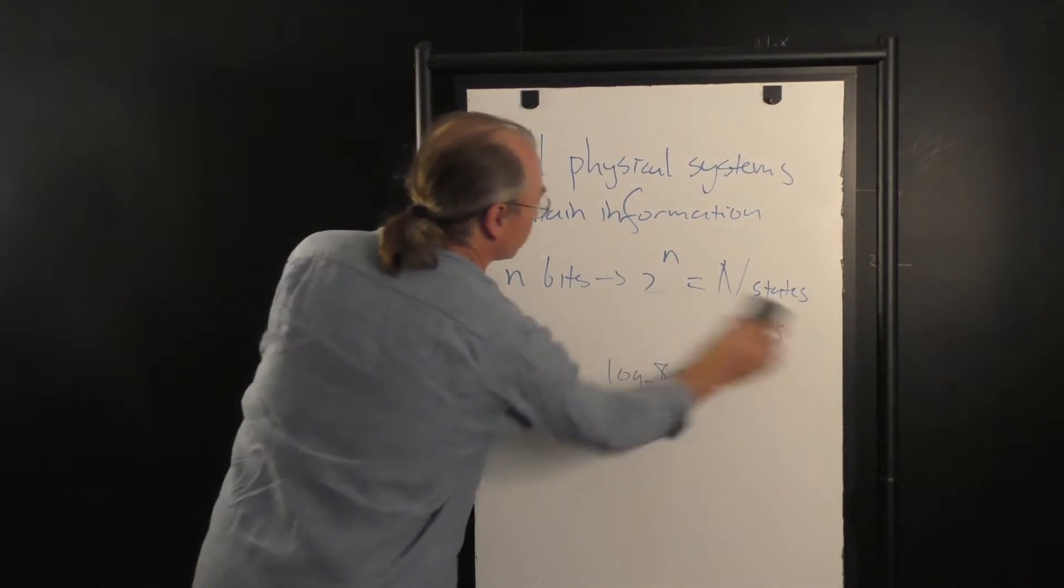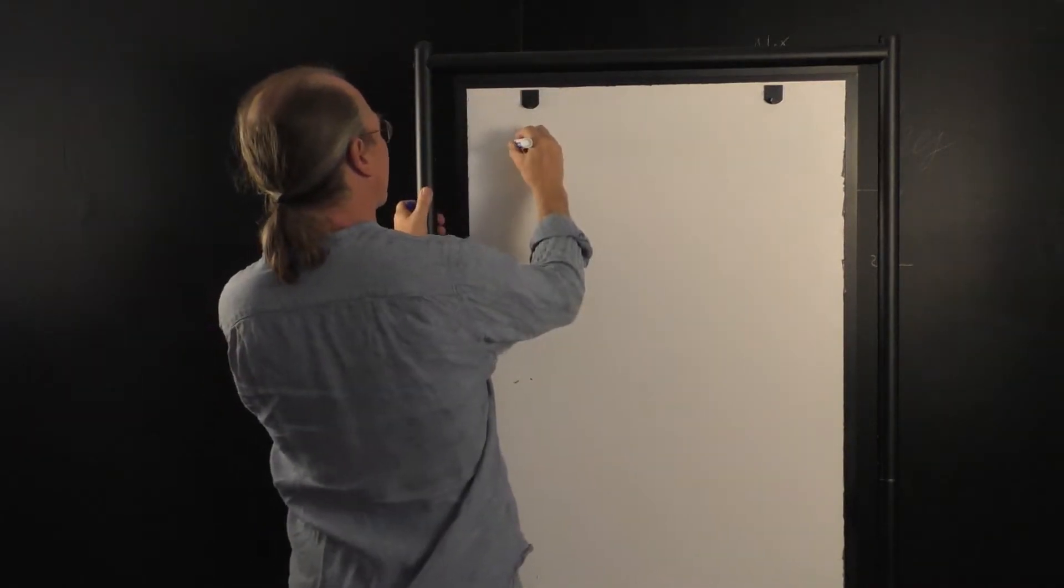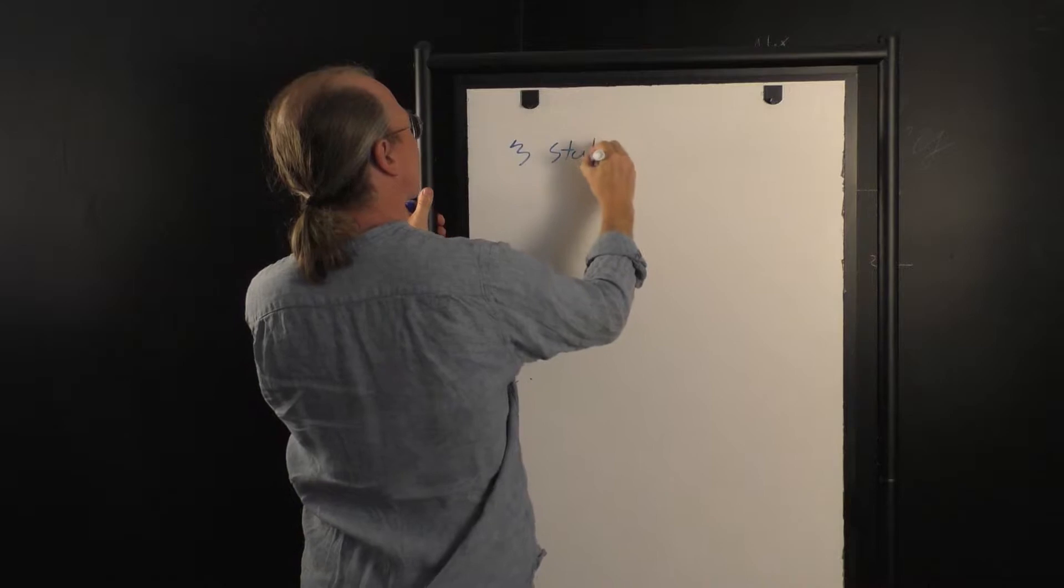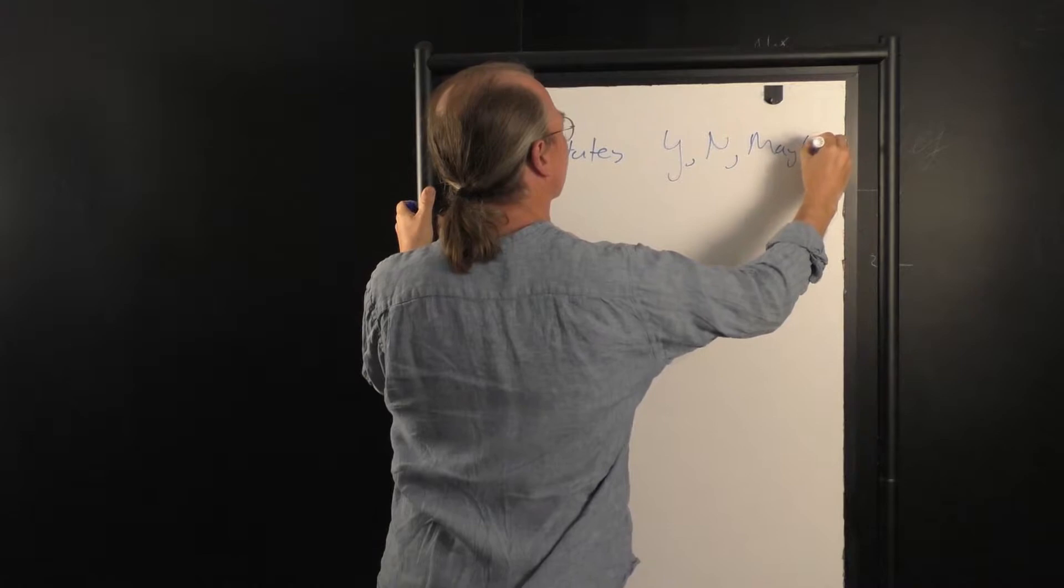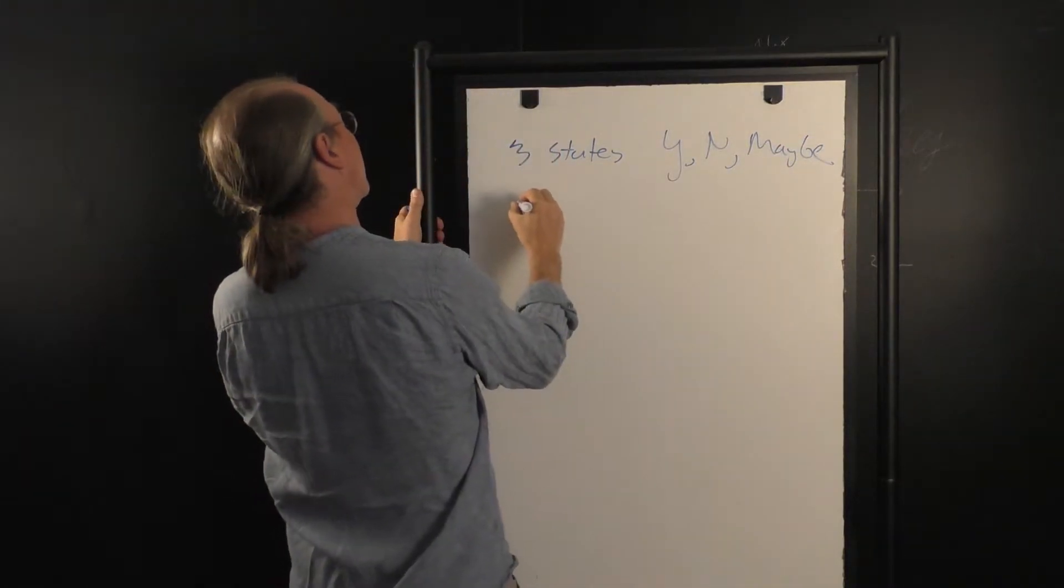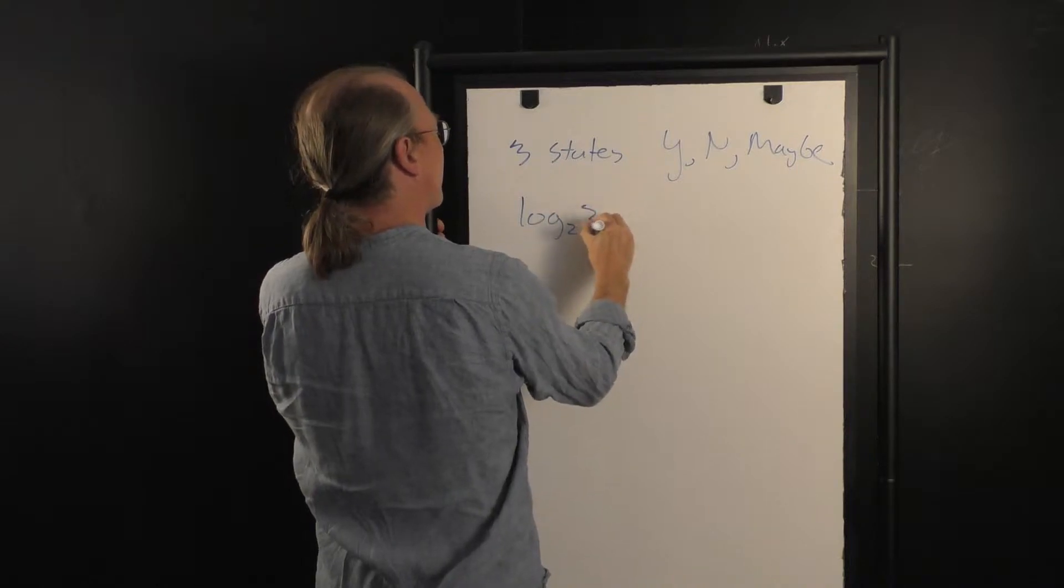So, for instance, if I have a system that has 3 states, for example, yes, no, and maybe, then it represents log to the base 2 of 3,